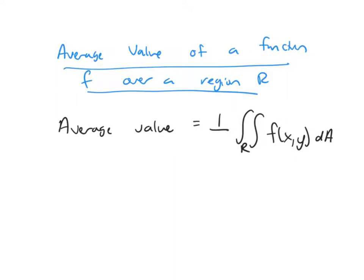so when you had a single variable, it was 1 over the length of your interval, b minus a. But now it's 1 over A, where A is the area of your region r.